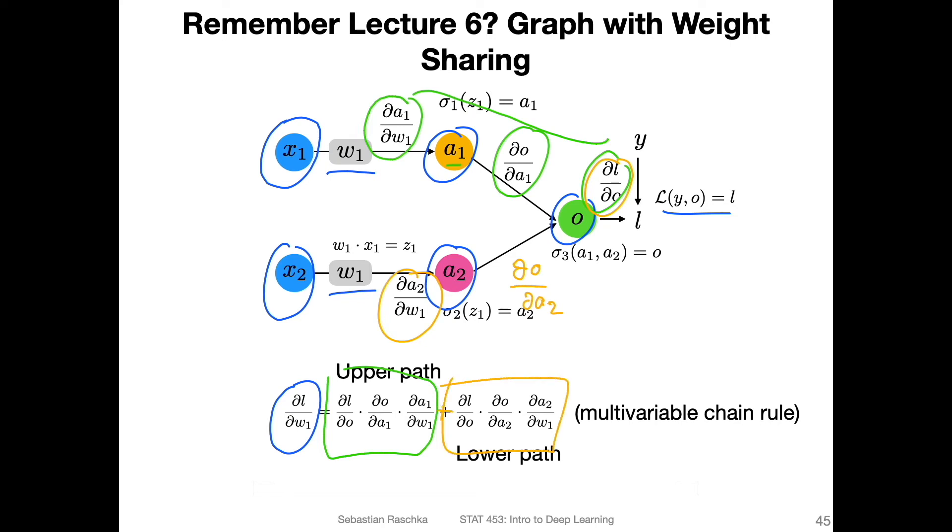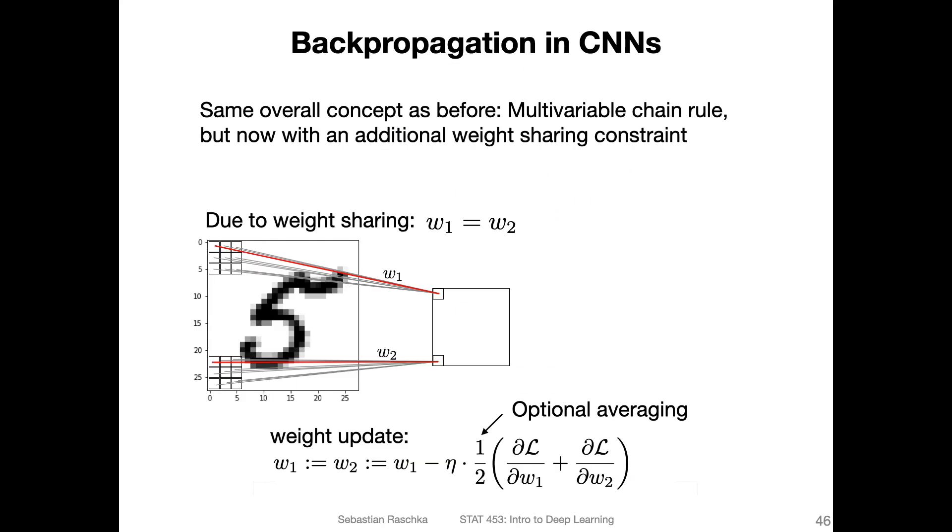And then we just add them together, because that's the multivariable chain rule. And that is essentially what's happening in the convolutional network. Of course, you have many layers, and that would be a little bit complicated to draw, but for simplicity,